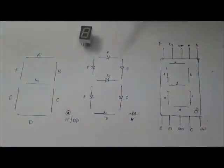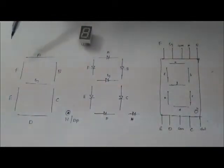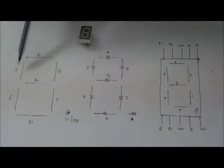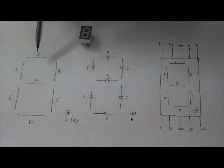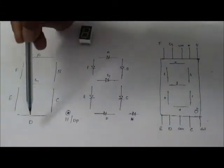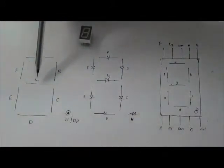Coming to the pin configurations, in these 7-segment displays, each segment is represented by some characters from A to G. Here it's A, B, C, D, E, F, G.